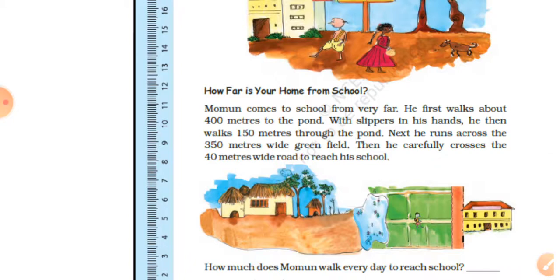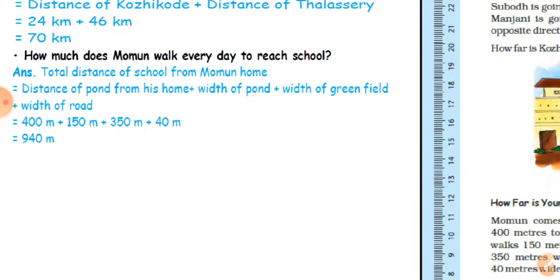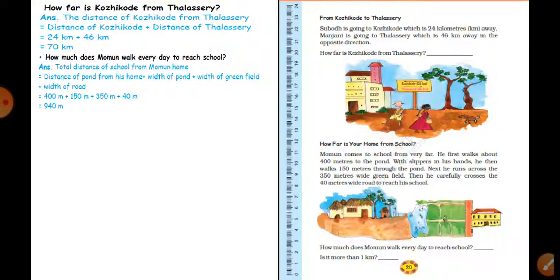Then he carefully crosses a 40 meters wide road to reach his school. How much does Momin walk every day to reach the school? The total distance from his home to school: distance to pond from his home is 400 meters, width of the pond is 150 meters, width of the green field is 350 meters, and width of the road is 40 meters.